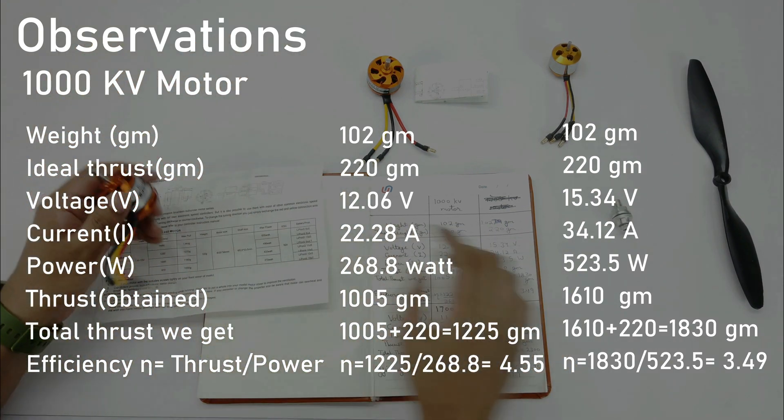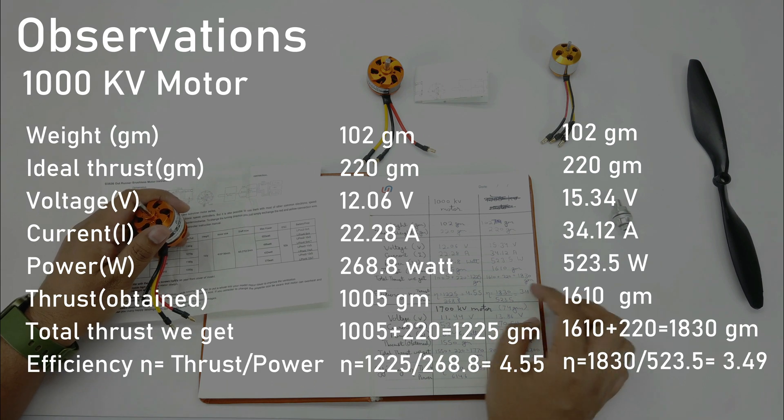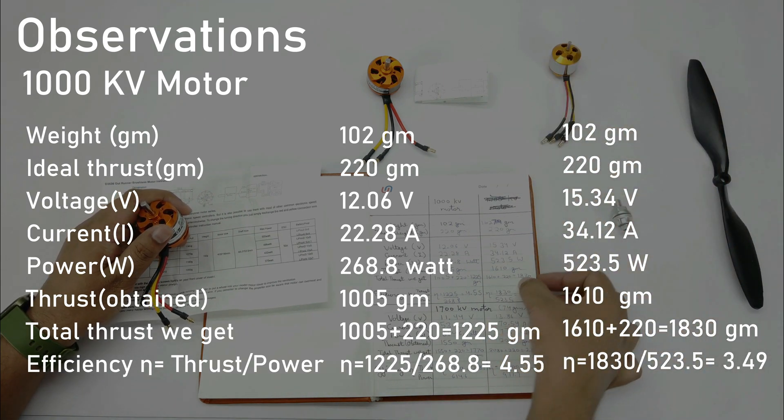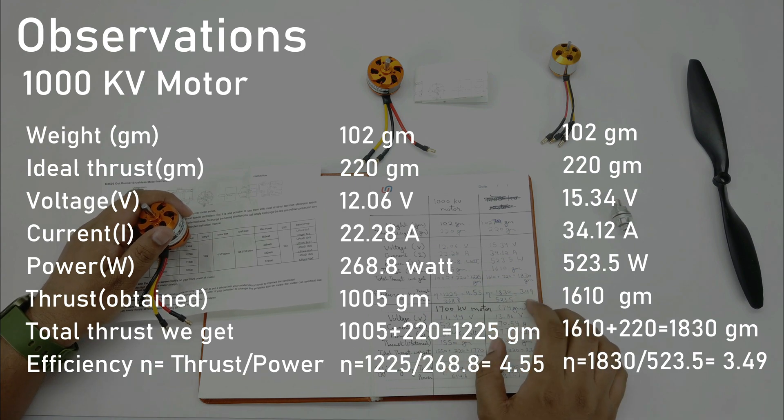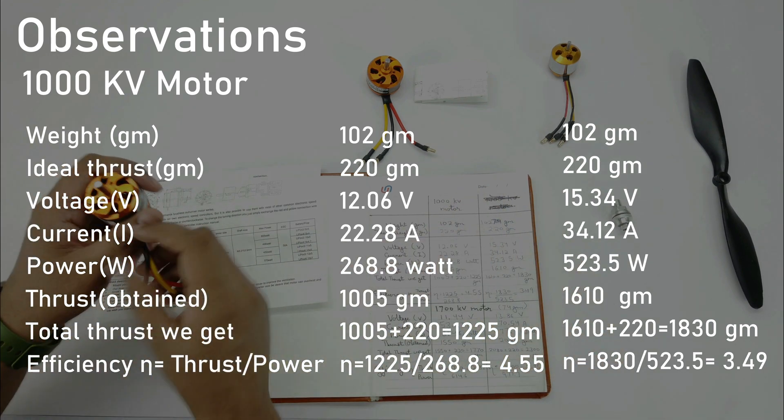Now when we connected this with a 4S battery, no doubt the thrust was too much. We got the thrust of 1830 grams, but the efficiency is quite less of 3.49. So we have to see how we have to use this motor.